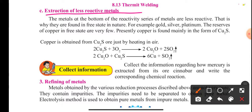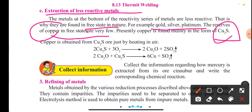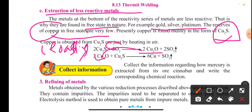Extraction of less reactive metals: less reactive metals usually occur in a free state in nature. They are gold, silver, and platinum. Copper is also less reactive but in nature it occurs in free state only occasionally — it usually combines with sulfur to form copper sulfide. When copper sulfide is roasted, we get copper oxide, and when copper oxide reacts with copper sulfide, we get copper and sulfur dioxide is released.